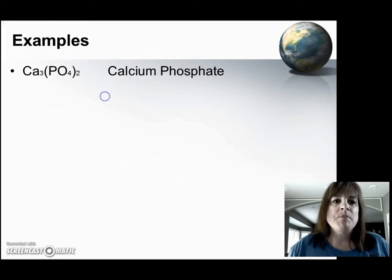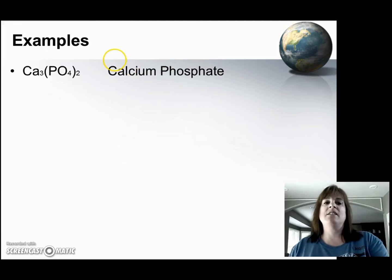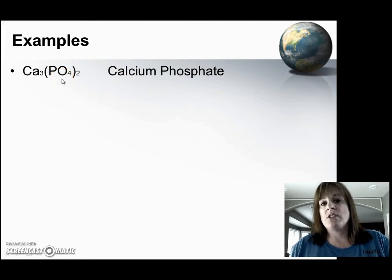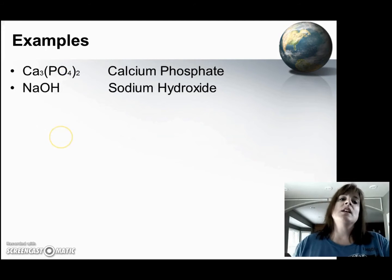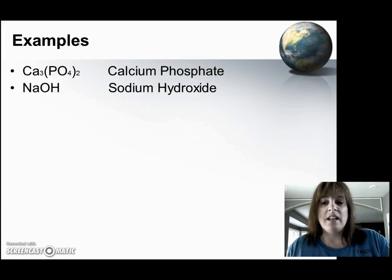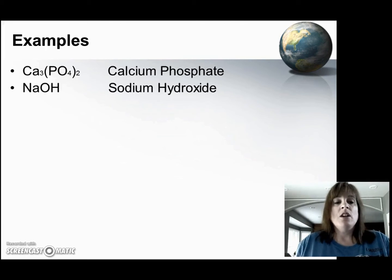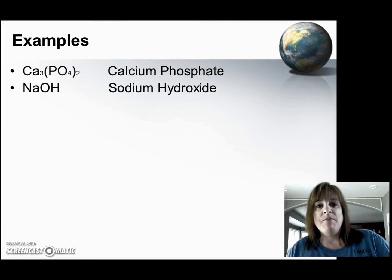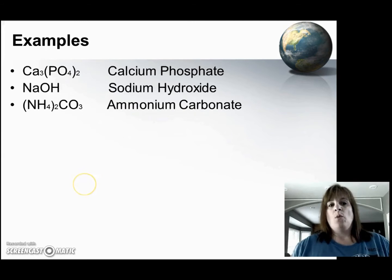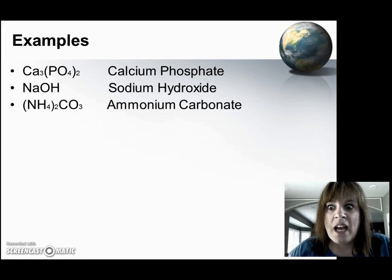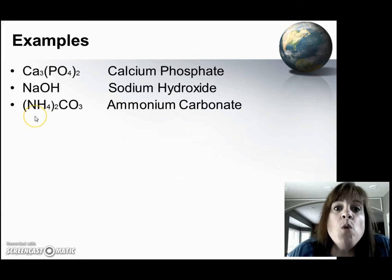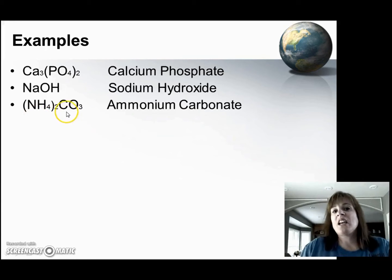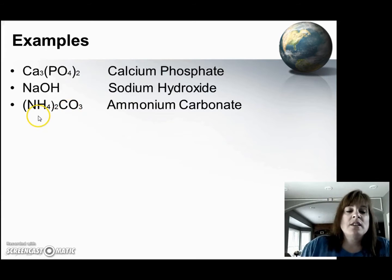Let's take a look at some examples. Here I have calcium bound to phosphate, so it's just calcium phosphate. And here I have sodium bound to the hydroxide polyatomic ion, so we call it sodium hydroxide. And we have two polyatomic ions now — the first polyatomic ion is ammonium, and our second polyatomic ion here is carbonate. So this is ammonium carbonate.